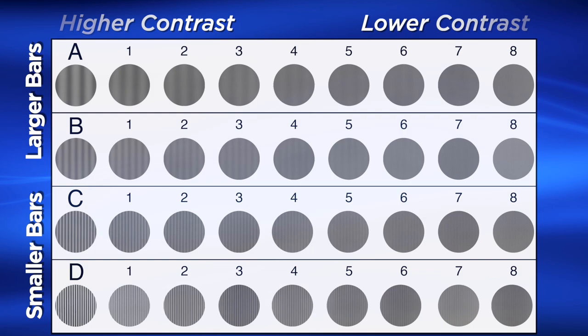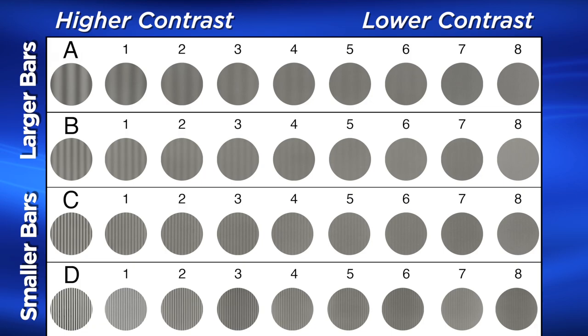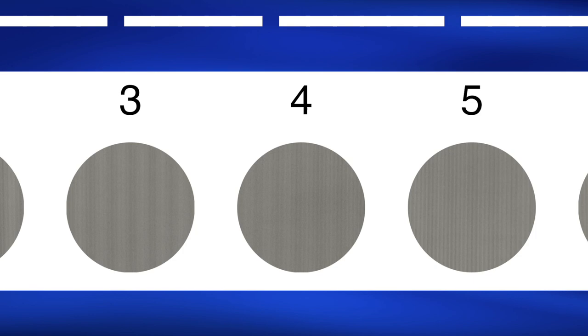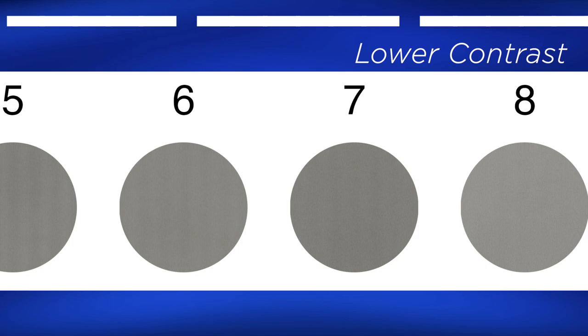Contrast sensitivity is tested by having you view different size bar patterns that are presented under different contrast levels. You can see here the larger bars and the smaller bars. And as you look across from left to right, the bars become lower contrast and more difficult to see. During the test, you are asked to determine when you can just barely see the bars.